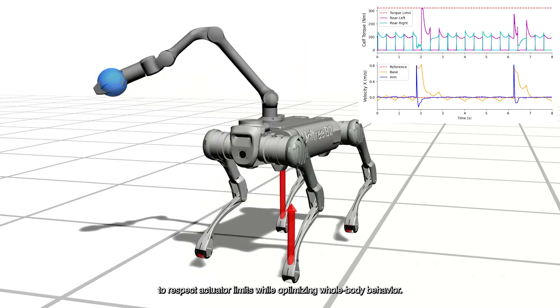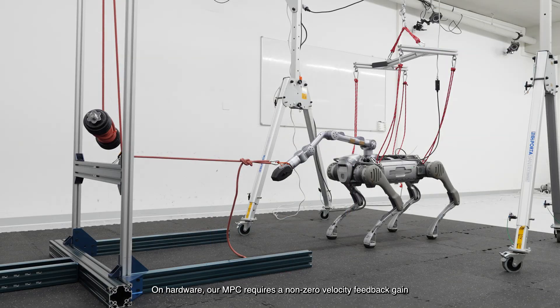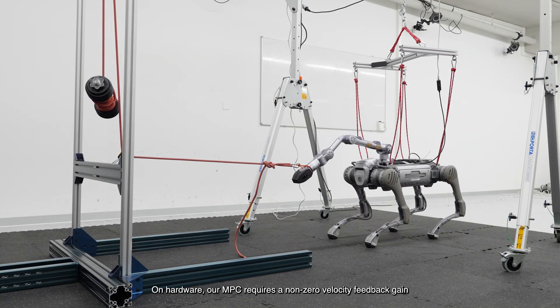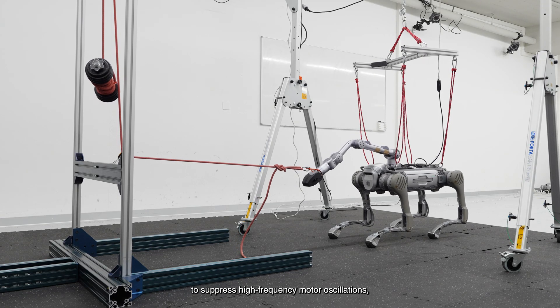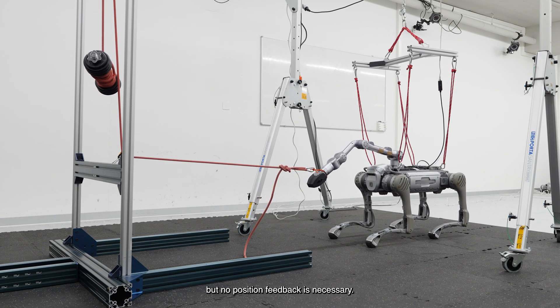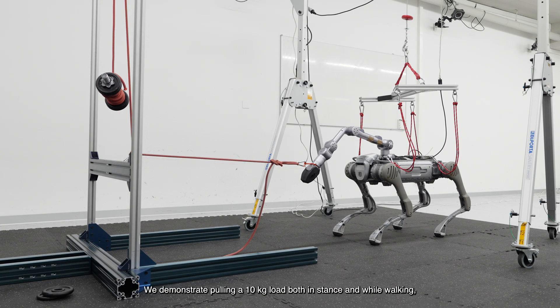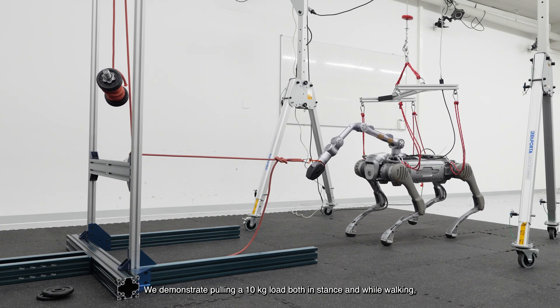On hardware, our MPC requires a non-zero velocity feedback gain to suppress high-frequency motor oscillations, but no position feedback is necessary. We demonstrate pulling a 10 kilogram load both in stance and while walking, significantly exceeding the arm's rated payload limit of 3 to 5 kilograms.